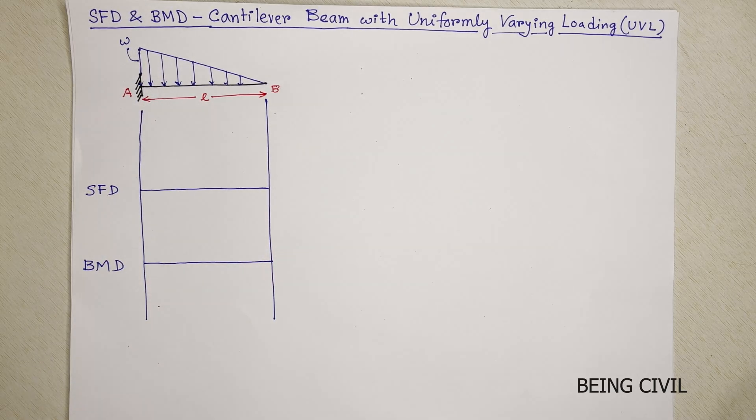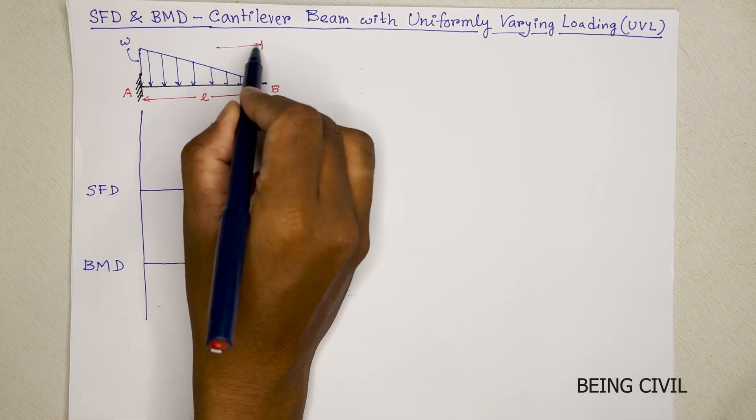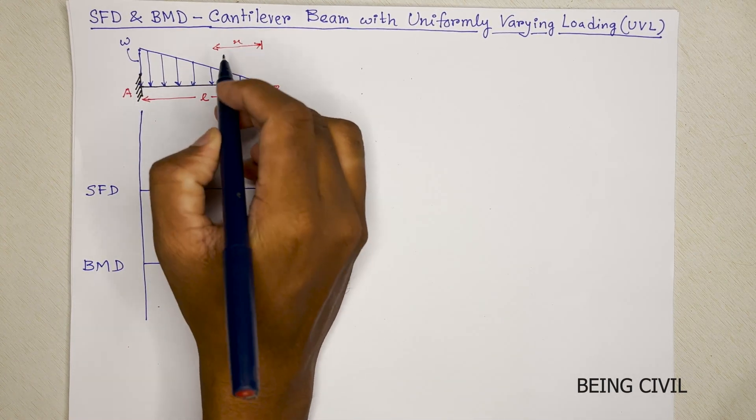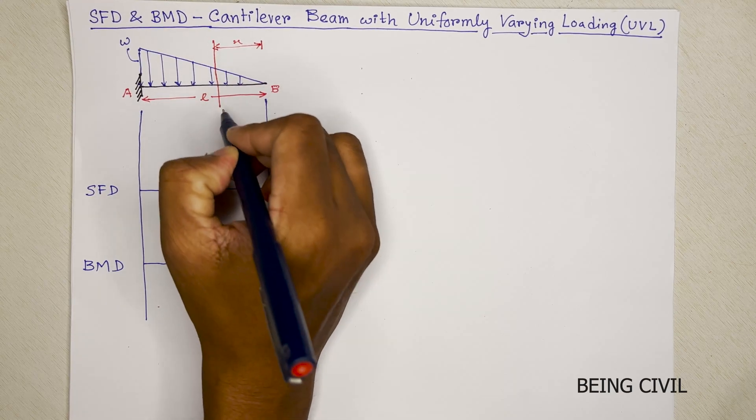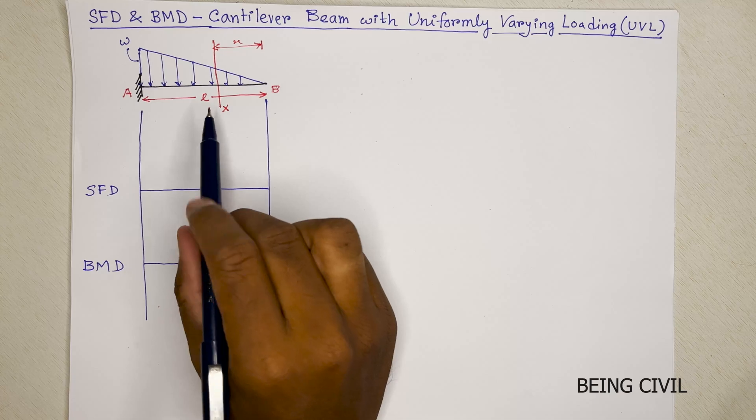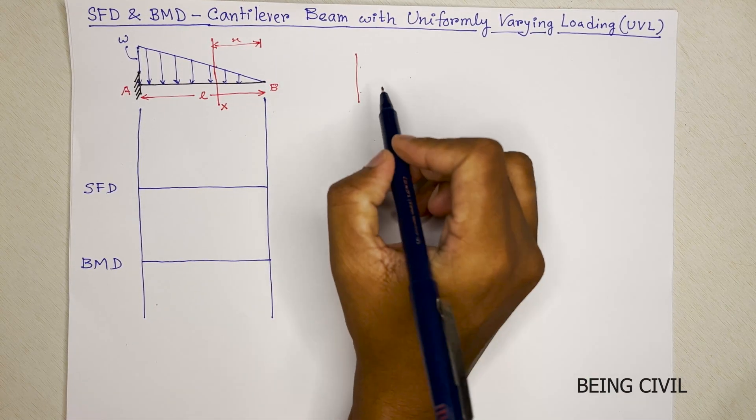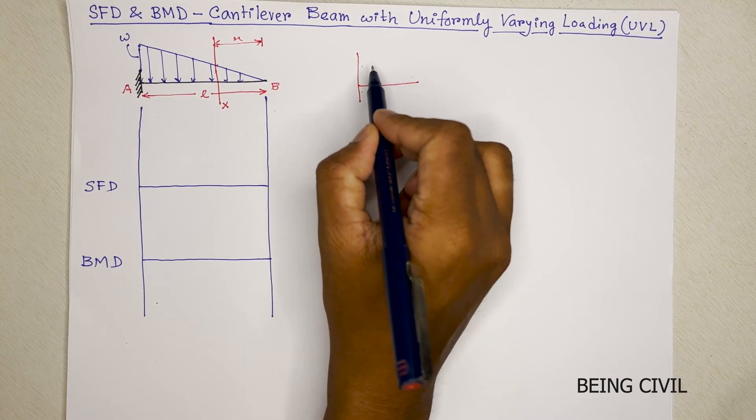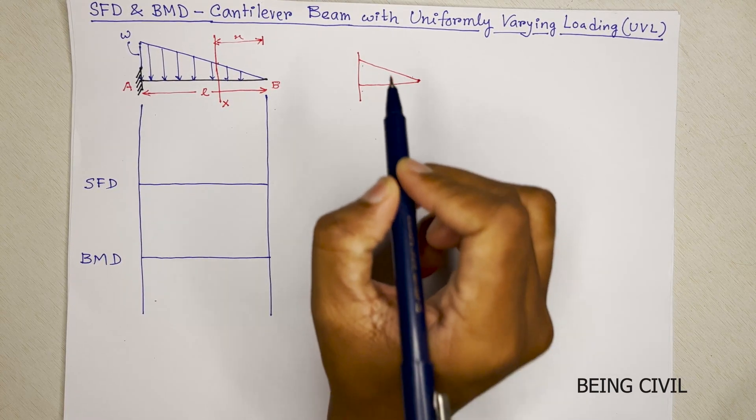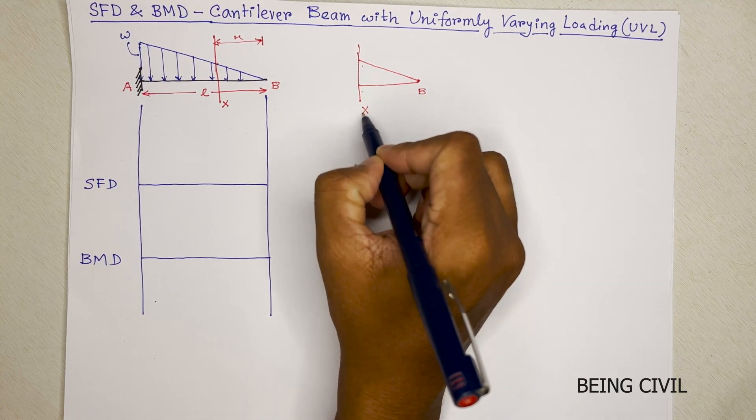We will first take a section at a distance small x from the free end. This is our section x and we will calculate the shear force and bending moment at this section. Let's draw this section here. This is the B and this is our section x.